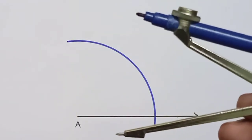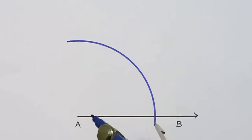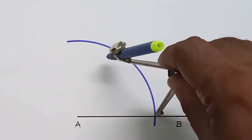With the same radius, don't change the radius, place the pointer on the intersecting point and cut the arc.